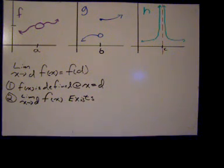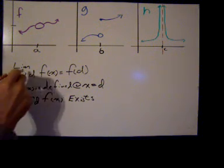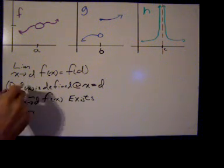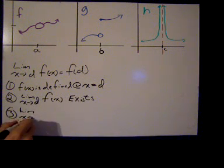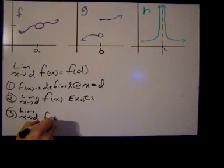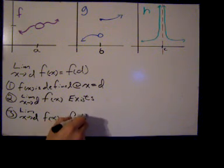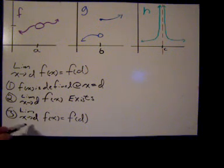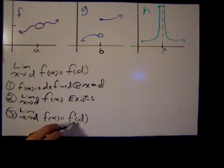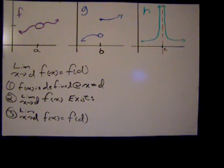This definition implies three things. One: f(x) is defined at x = d. Two: the limit as x approaches d of f(x) exists, meaning the double-sided limit exists — the limit from the left and the limit from the right are not different. And three: the limit as x approaches d of f(x) equals f(d) — the double-sided limit equals the function evaluated at that value of x.